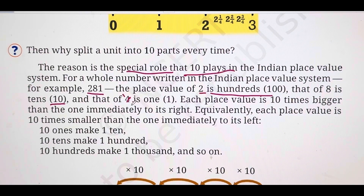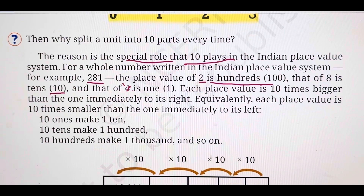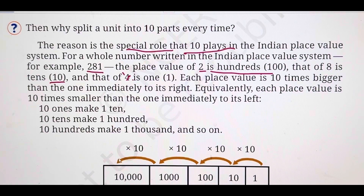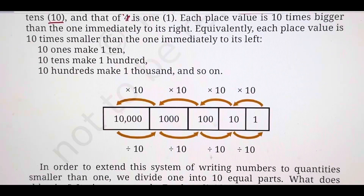Each place value is 10 times bigger than the one immediately to its right. So if you keep jumping left, it becomes 10 times bigger each step. 10 ones make 1 ten; 10 tens make 1 hundred. You are multiplying by 10 each time — then 100, then 1,000, then 10,000, and so on. You can go on multiplying by 10 to get higher place values.